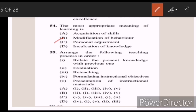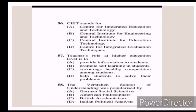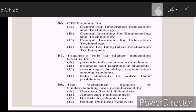Fifty-five: arrange the following teaching processes in order. Answer D — four, one, five, two and three. Fifty-six: CIET stands for — Answer C — Central Institute for Educational Technology.